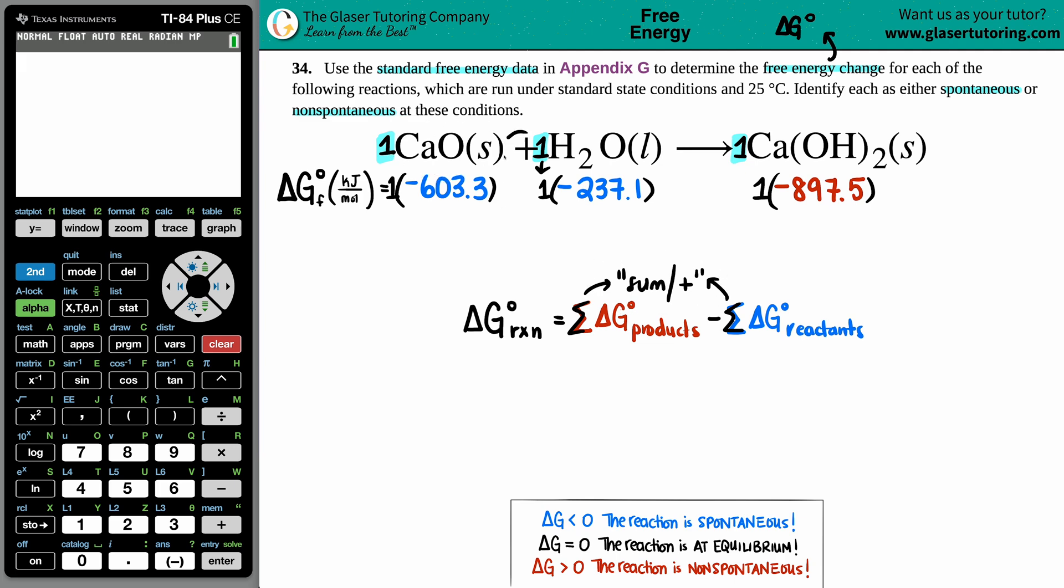Now we need to sum it up. Literally, the balanced equation says CaO plus H2O, so this value plus this value. On the product side, since I don't have two products, I don't have to sum up anything. So the amount for the products would just be that one product, -897.5, because it's being multiplied by one.